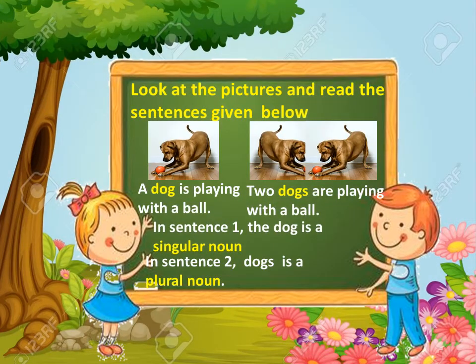Look at the picture and read the sentences given below. In the first picture, a dog is playing with a ball. In the second picture, two dogs are playing with a ball. In sentence 1, the dog is a singular noun, while in sentence 2, dogs is a plural noun.